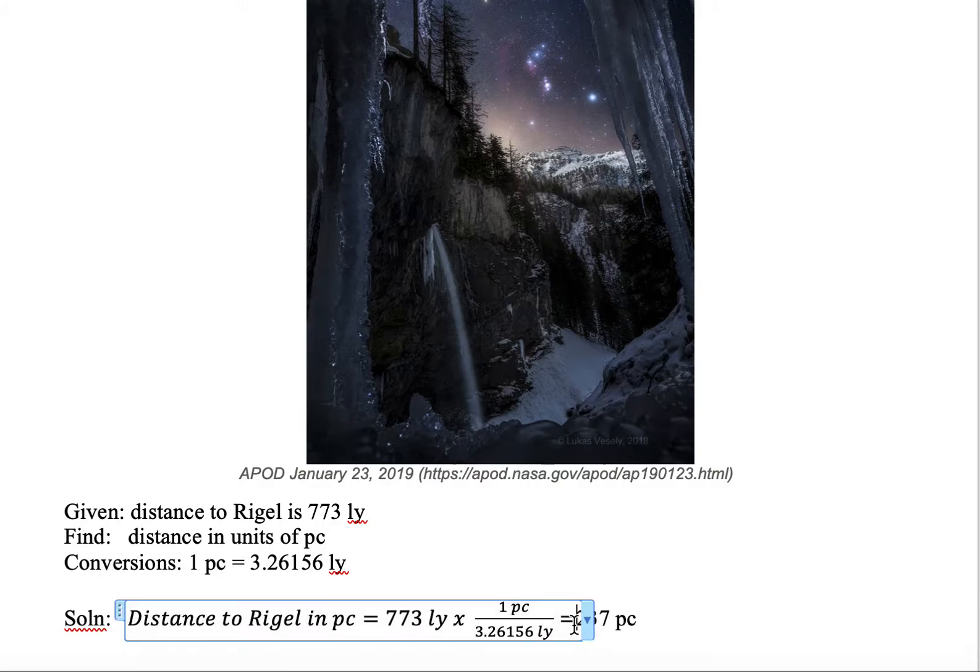So now what we have is that the distance to Rigel in parsec equals 773 light years multiplied by 1 parsec divided by 3.26156 light years, and that is going to equal 237 parsecs. So the distance to Rigel is 773 light years, and in terms of parsec it is equal to 237 parsecs. This is how you convert from one unit to another in general.